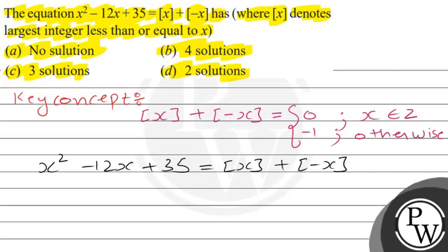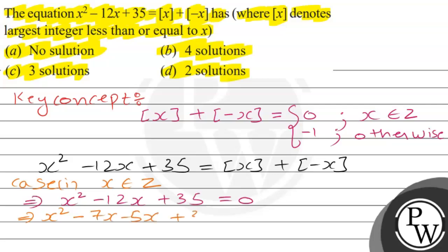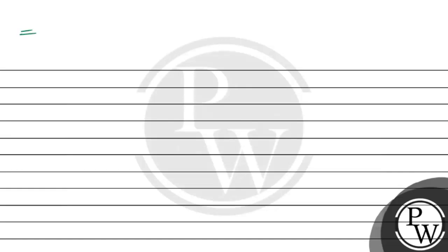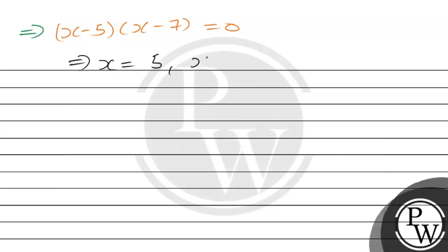For the greater integer function of x plus greater integer function of minus x: first, when x is an integer, this equals 0. This implies x squared minus 12x plus 35 equals 0, which factors as x minus 5 times x minus 7 equals 0. This implies x equals 5 and x equals 7.